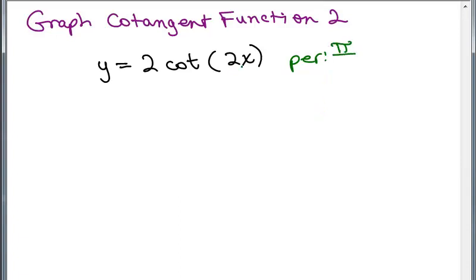And in this case, B is the coefficient of X, so it's pi over 2. The period for the cotangent is pi over 2.